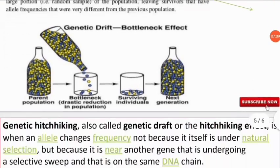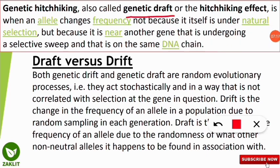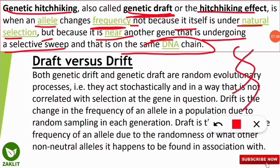Genetic hitchhiking is also known as genetic draft — distinct from genetic drift. Genetic hitchhiking is the effect when an allele changes its frequency not because it itself is under natural selection, but because it is near another gene undergoing a selective sweep on the same DNA chain. In a DNA strand, one allele changes not on its own, but because a nearby allele is also changing due to selective sweeping — the swapping of genes on the same DNA.